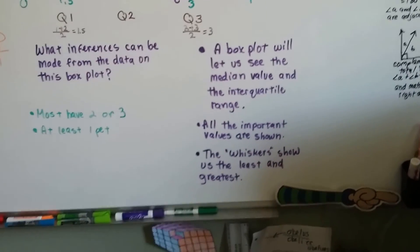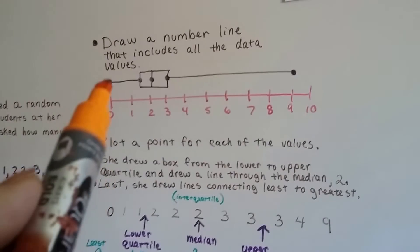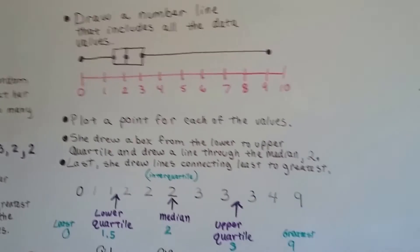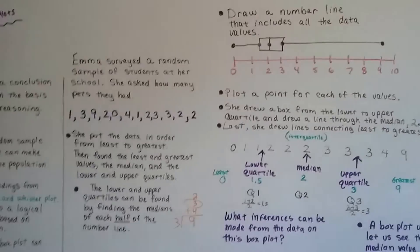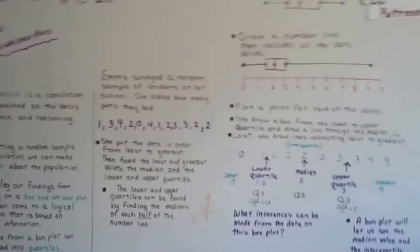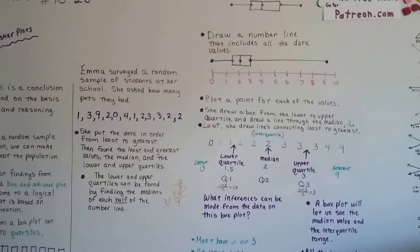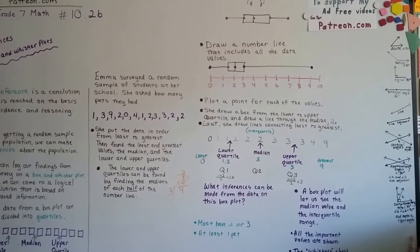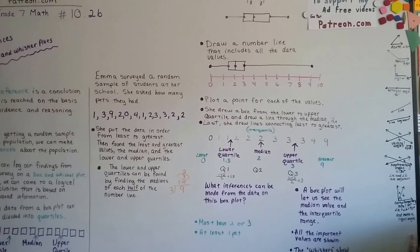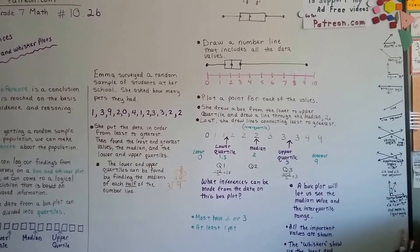And the whiskers show us the least and greatest. So we can just look at this right away and say, someone has zero and someone has nine. So it lays it out nice and easy for the eyes to see. So we're going to talk about proportions next. I hope I made this clear enough. I know this can be confusing. So we're going to move on to 10.2c and talk about proportions. See you there. Bye.